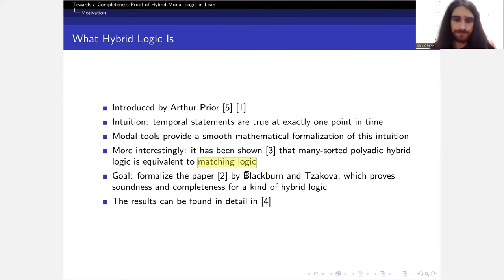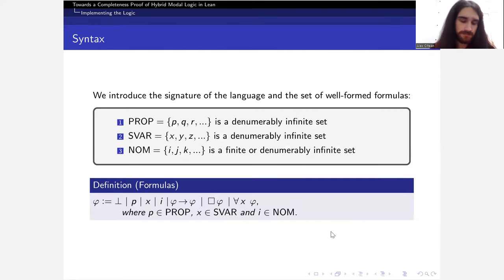What I did was take a paper by Blackburn and Tzakova, who describe one of the variants of hybrid logic and prove its soundness and completeness properties, and I tried to translate it in Lean to formalize the paper, basically. I will list all of these references in detail at the end, if you're interested in reading more about this. But let's focus on the language itself, how the syntax is defined.